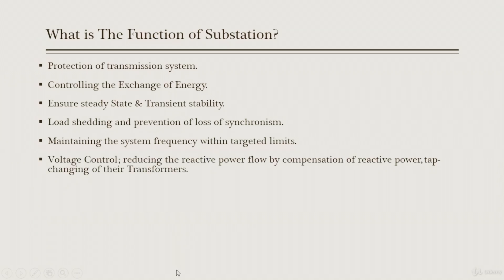Voltage control can be achieved by reducing reactive power flow through compensation of reactive power and tap changing of transformers. Our generators generate both active power P and reactive power Q. When the demand for reactive power increases, Q increases and our voltage starts to decrease.